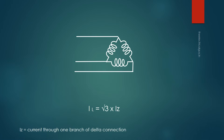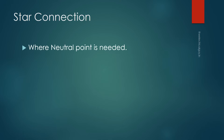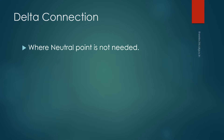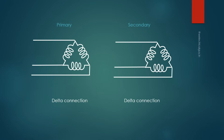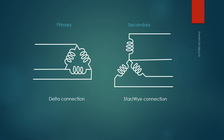Generally, star connection is used where a neutral and two separate voltages are needed, such as in distribution systems. Delta connection is preferred where a neutral conductor is not needed, such as in high-voltage power transmission, and also where third harmonics need to be controlled. You will find three-phase transformers connected in different combinations: star-star for auto-transformers, delta-delta for high-voltage transmission, and delta-star as distribution transformers.